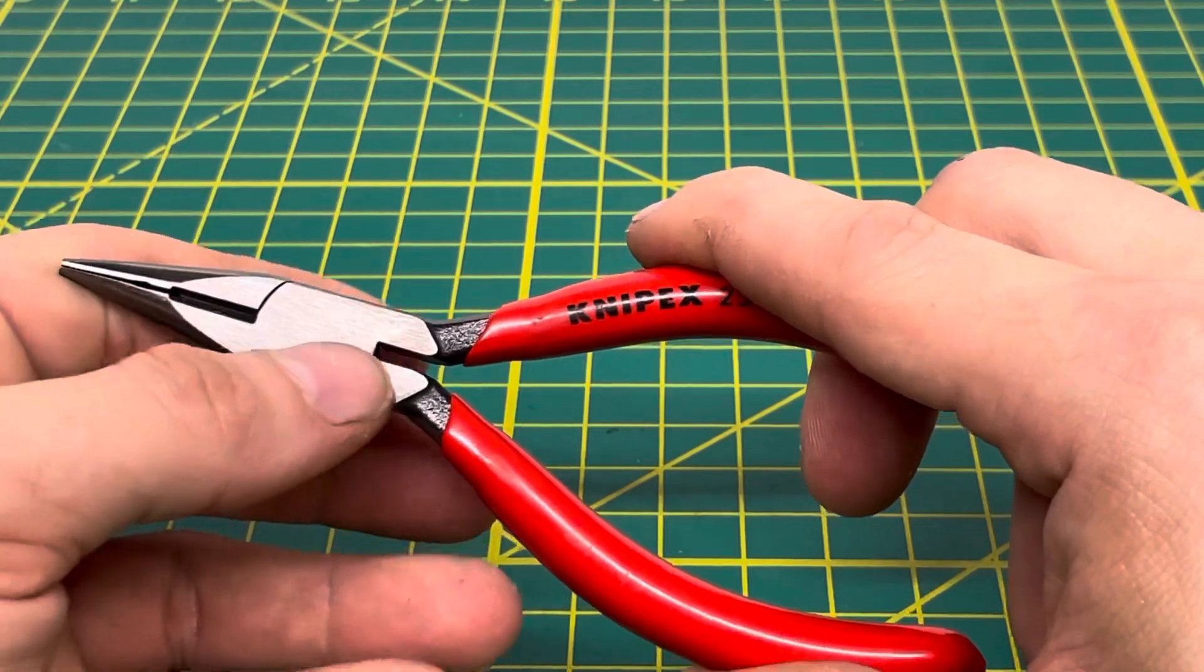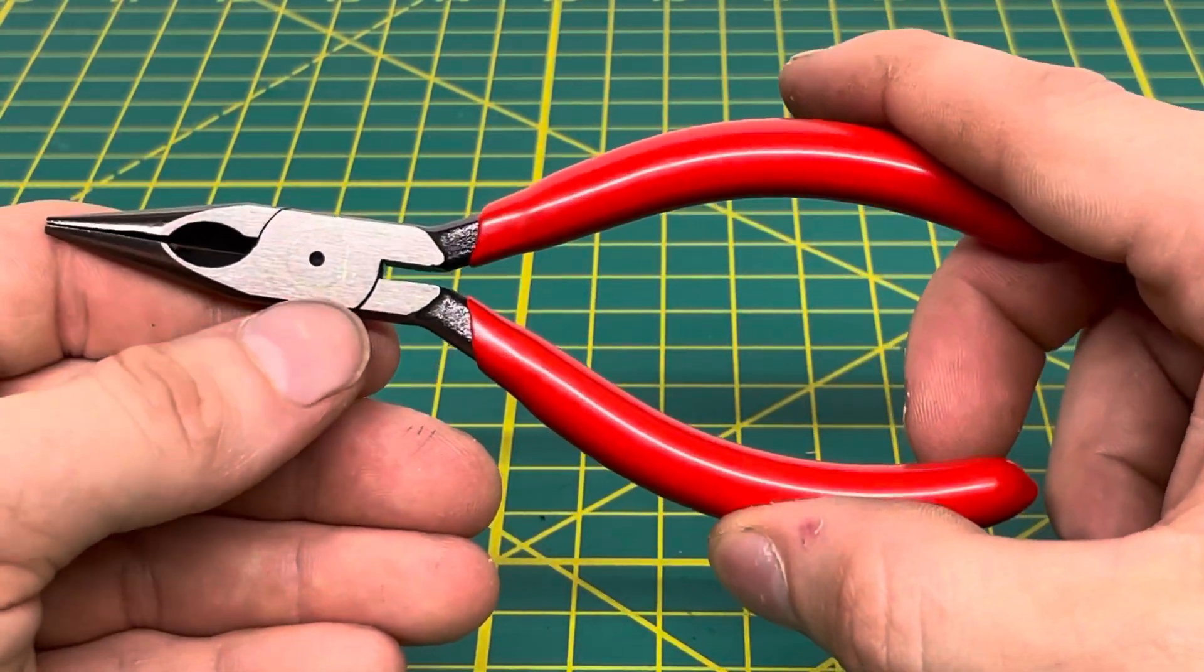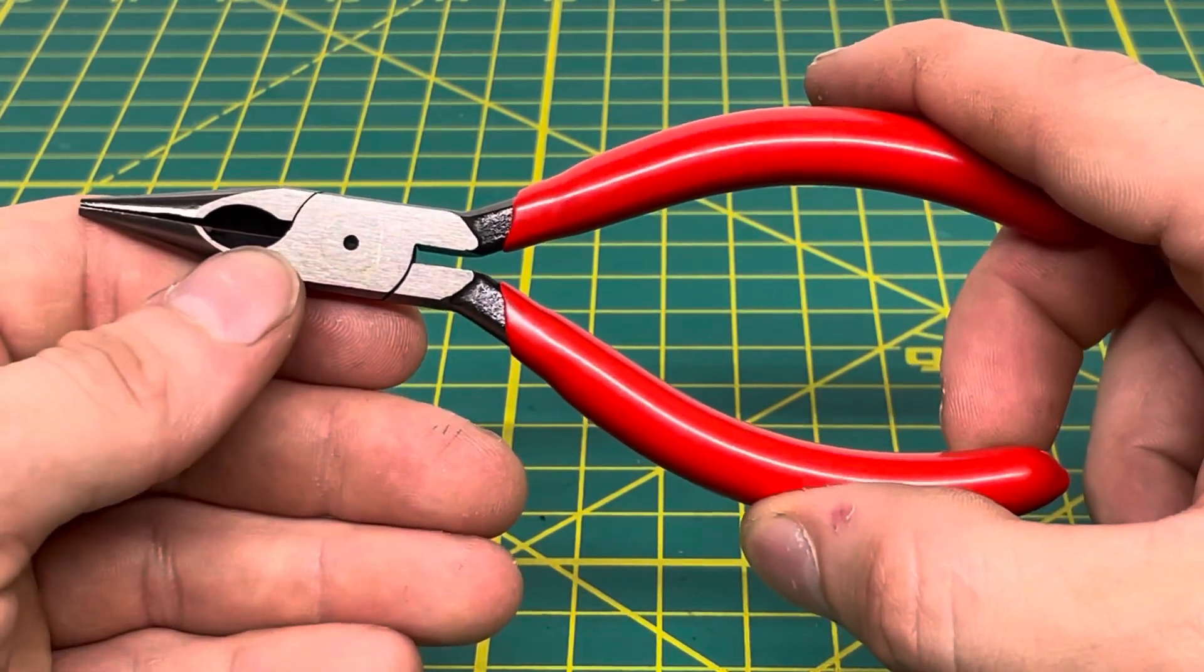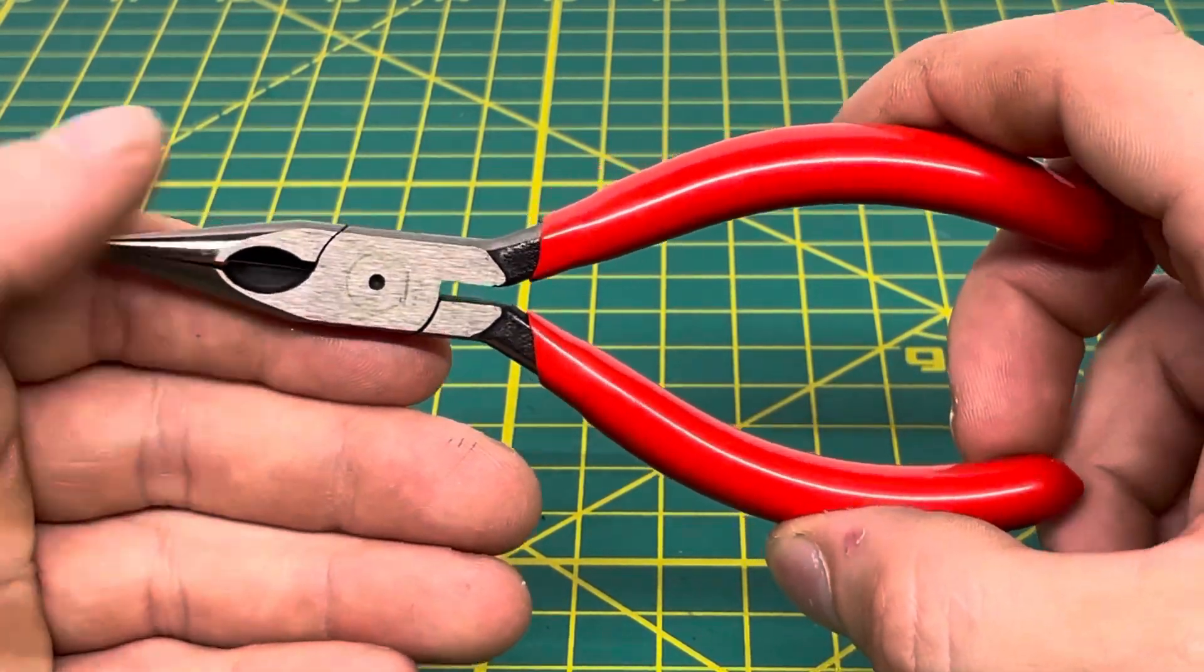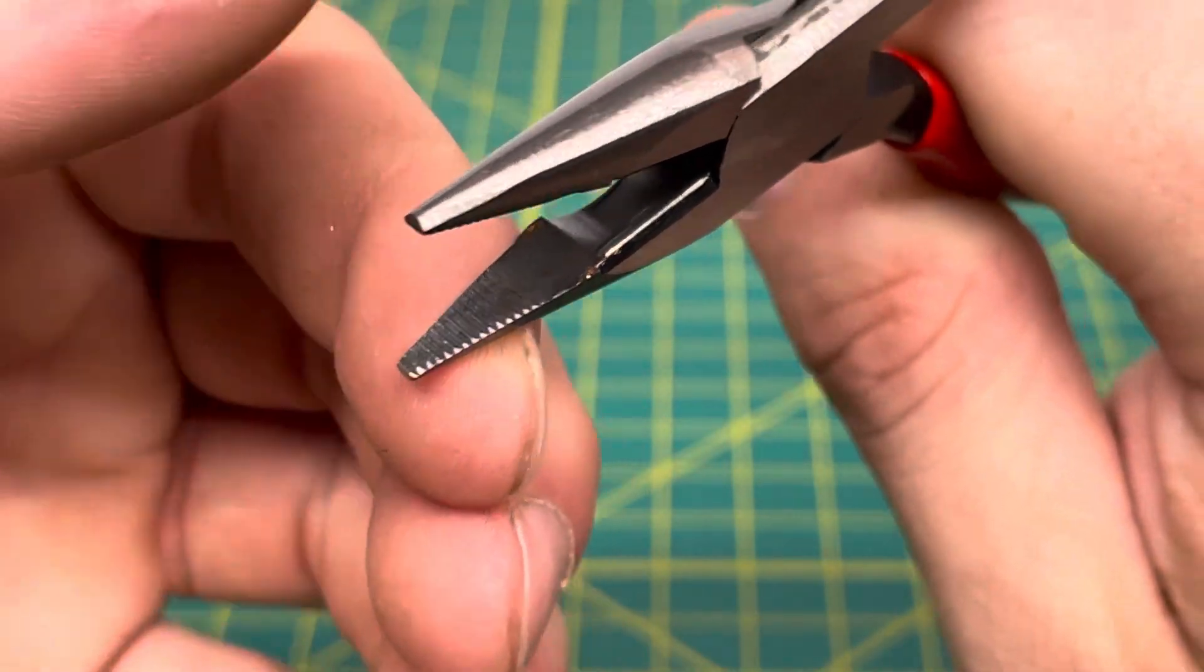Coming to the back side, you can see there's a very small rivet and the opening for the wire cutter. You have some very fine teeth on the nose of the plier as well.